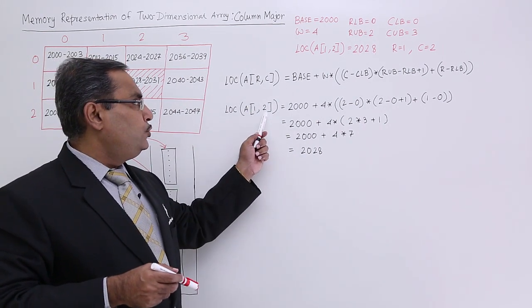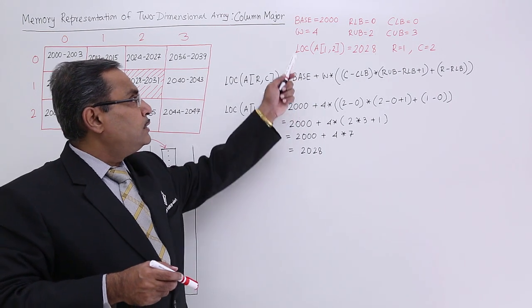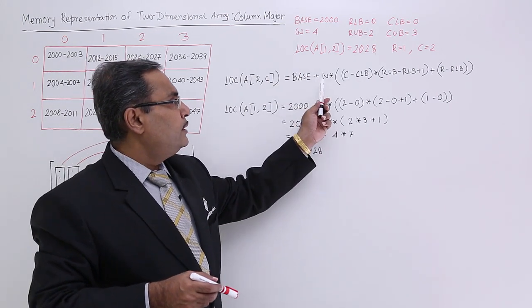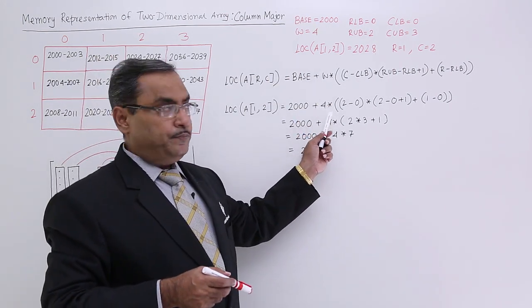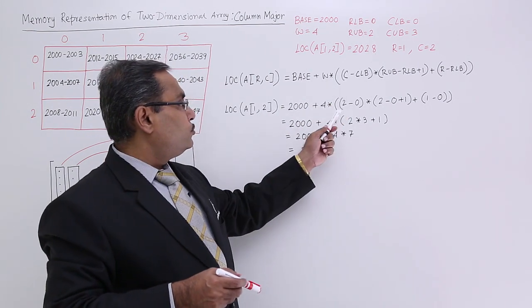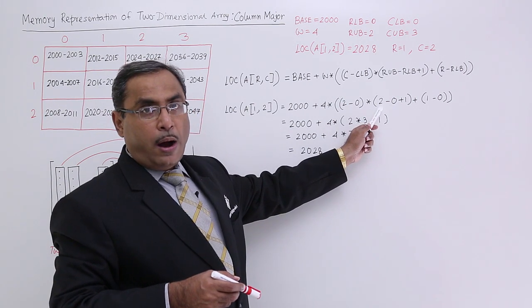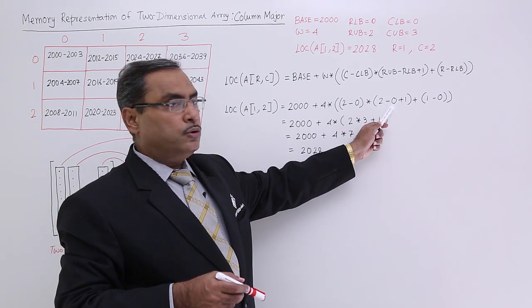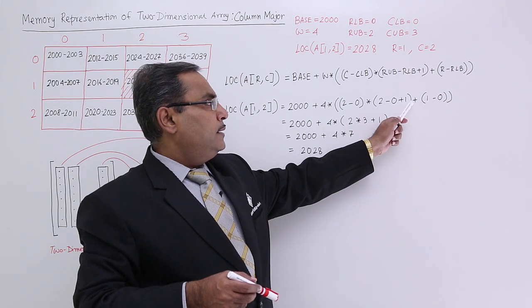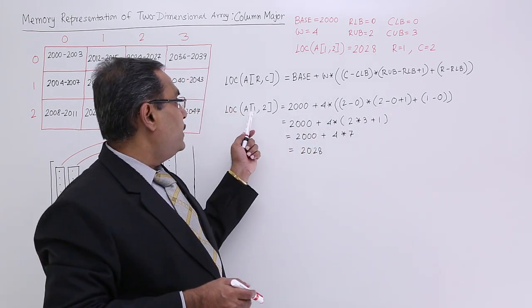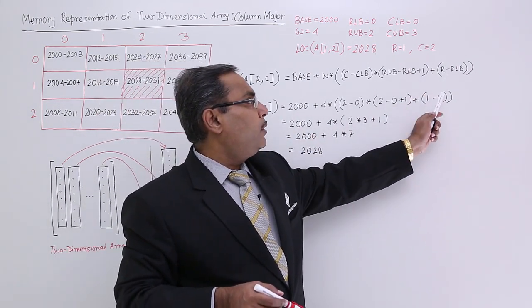R is equal to 1 and C is equal to 2. Base is equal to 2000 already we have written. So W star means 4 star. So C is equal to 2, 2 is there and C lower bound is 0. Star is the row upper bound minus row lower bound plus 1 plus row number. Row number is 1, so 1 and row lower bound is equal to 0.